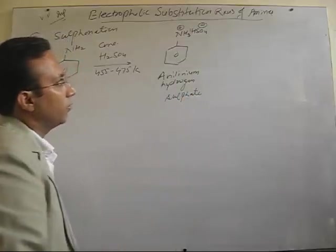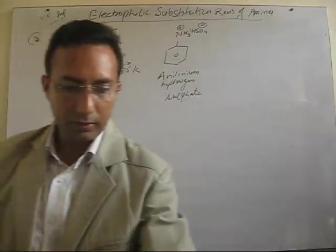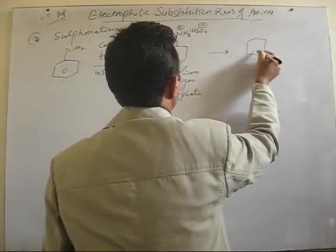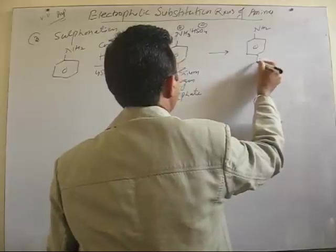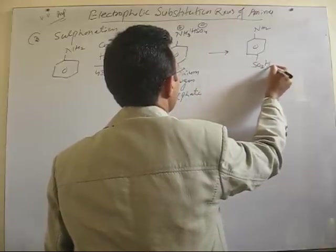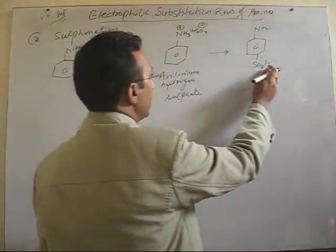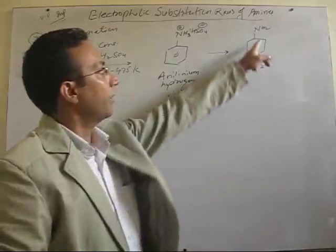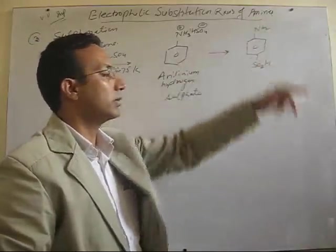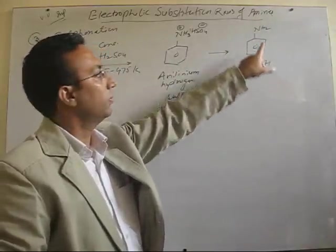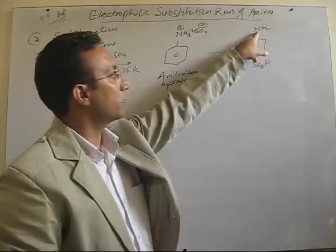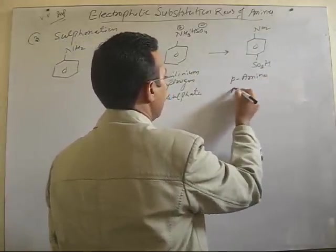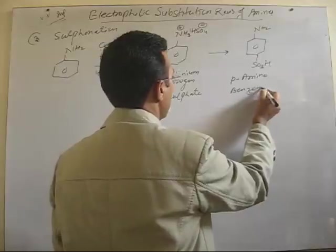So, this cation is formed and further under the same condition, this cation gives us para-amino benzene sulfonic acid. This SO3H group along with the ring is called benzene sulfonic acid. And if NH2 group is present, this is the principal functional group and this is acting as a substituent. That is why it is para-amino benzene sulfonic acid.